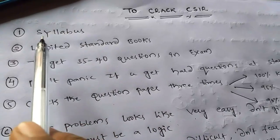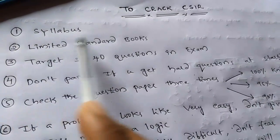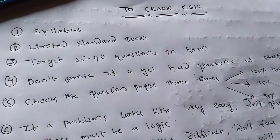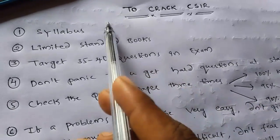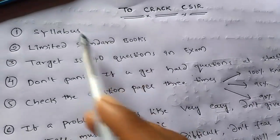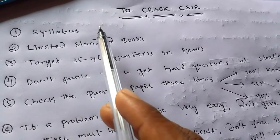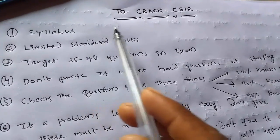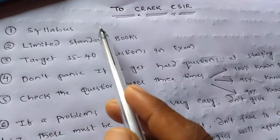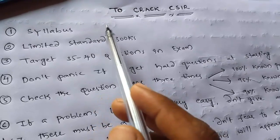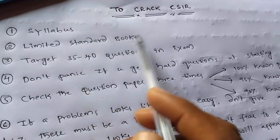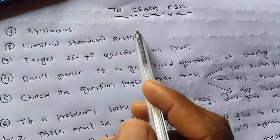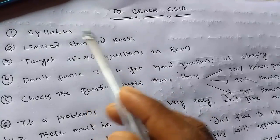The first key point is we need to know the complete syllabus of CSIR net. We have organic, inorganic, and physical. In those three, if you are familiar with organic, go hard for it. Choose because organic, inorganic, and physical, these three have equal proportion of marks or weightage in CSIR net.